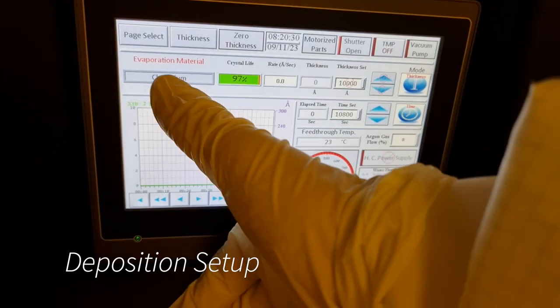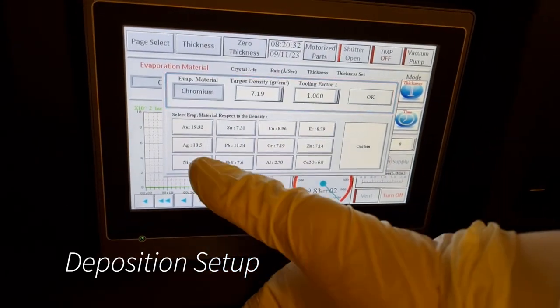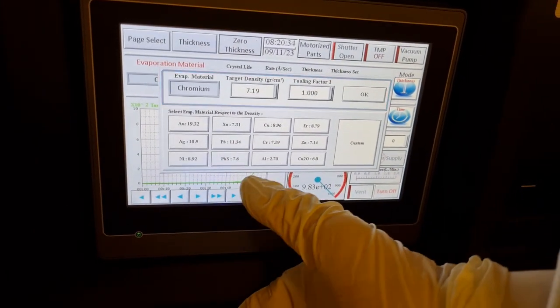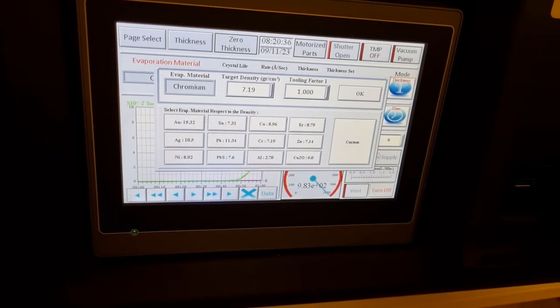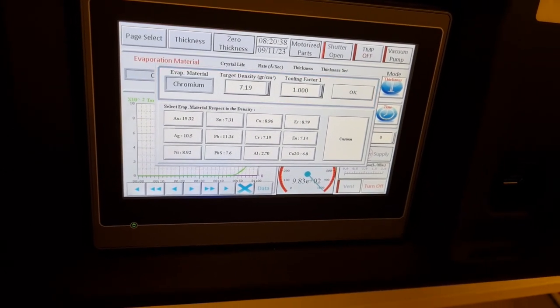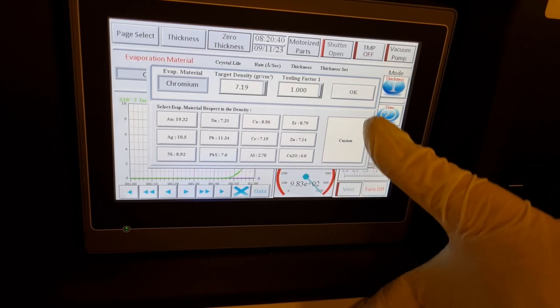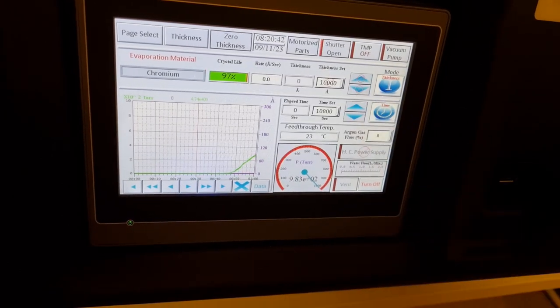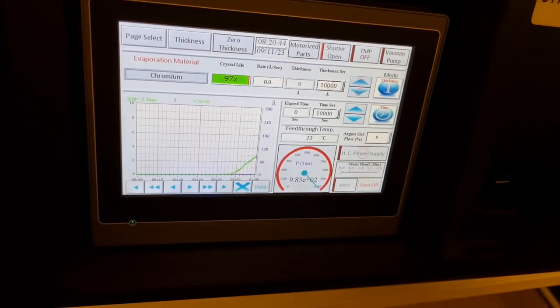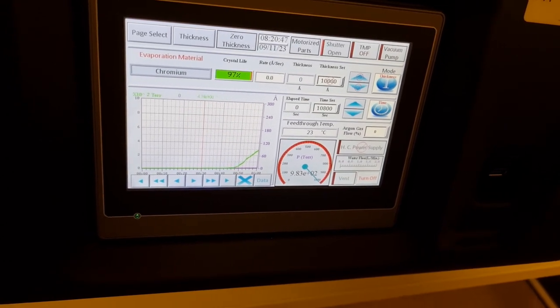We're going to do a chrome coating first. So we'll press the evaporation material. It brings us a menu of materials. It's already on chrome. It comes pre-loaded with target density and other parameters that are needed for calibration. But the tooling factor is a local calibration factor that needs to be set through trial and error.